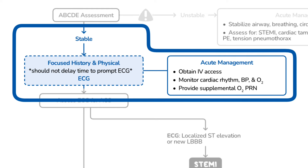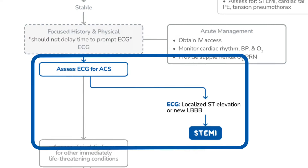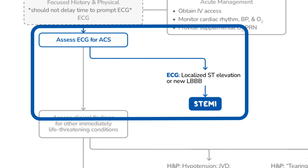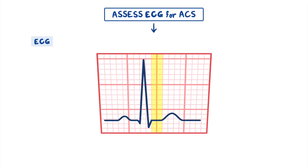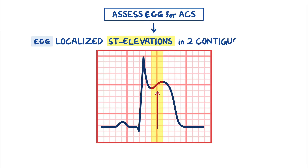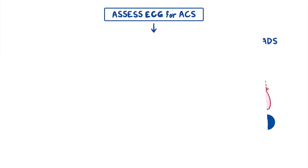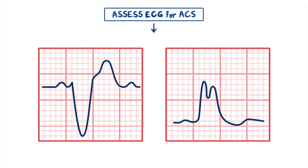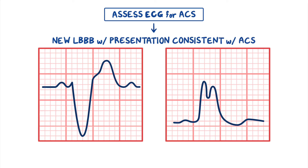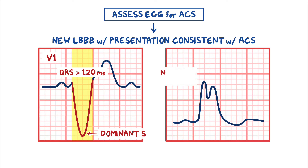Now that you've done the history and physical, the ECG, and acute management, it's time to check for the acute coronary syndrome, or ACS. The first condition to look for is an ST-elevation myocardial infarction, or STEMI. In an ECG, look for localized ST elevations in two contiguous leads. If present, that's diagnostic for a STEMI. However, a left bundle branch block, or LBBB, can mask ST elevation, so the diagnosis can also be made if there's a new LBBB with presentation consistent with ACS. LBBB typically presents as QRS longer than 120 ms, a dominant S-wave in V1, and broad-notched R-waves and absent Q-waves in the lateral leads, like V6.